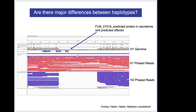Are there major differences between the haplotypes? Yes. This is the H1 genome — these are reads phased to H1, and these are long reads phased to H2. This is a predicted effector, and here is another gene that has been split, but you can definitely see there is a gap. My effort in trying to find these effectors has not been in vain, because we're definitively showing that in one haplotype there are genes predicted to be effectors that are missing in the other. We're putting the finishing touches on this now and hope to have the paper out soon.